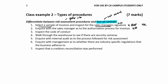Inspecting the code of conduct — which explains how everyone in the business should behave — forms part of the control environment. Looking at it doesn't give evidence over a specific control activity; it gives evidence over the control environment. So this is a risk assessment procedure: trying to understand that they have a code of conduct. Similarly, walking through the warehouse to see if there are security cameras is also a risk assessment procedure.